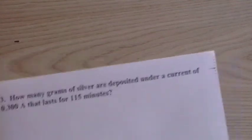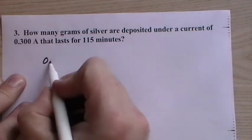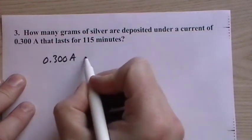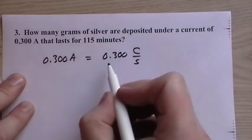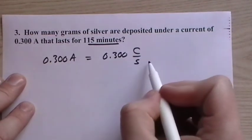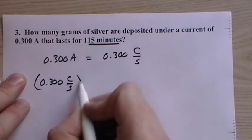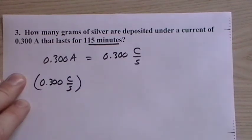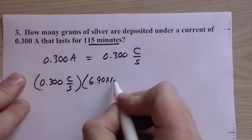Now, we can go the other route too. How many grams of silver are deposited under a current of 0.300 amps? So we have 0.300 amps, which is equal to 0.300 coulombs per second. So if we multiply this by seconds, we'll find coulombs, and then we can work backwards from there. So it's just the reverse of what we did previously. So 115 minutes is 6.90 times 10 to the third seconds.